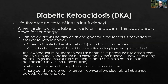That leads us to diabetic ketoacidosis, otherwise known as DKA. This is a life-threatening state of insulin insufficiency — absolutely no insulin production — and we tend to think about DKA associated with type 1 diabetes. When insulin is unavailable for cellular metabolism, the body breaks down fat first, producing fatty acids and ketone bodies that accumulate, leading to metabolic acidosis. The pH lowers, cells die, potassium levels rise, and we have severe dehydration, severe electrolyte and fluid imbalances, and acidosis — all of which will lead to coma and death if this situation is not reversed.